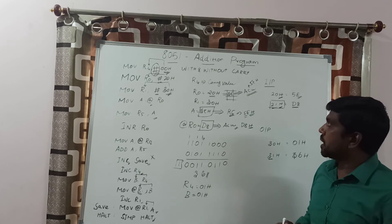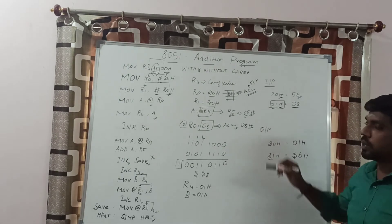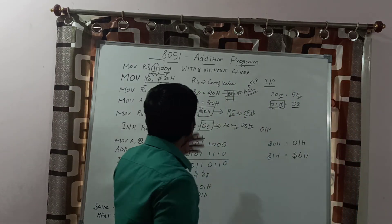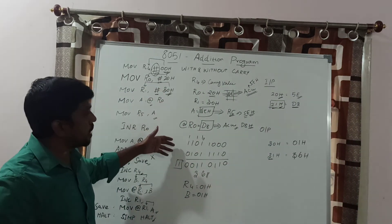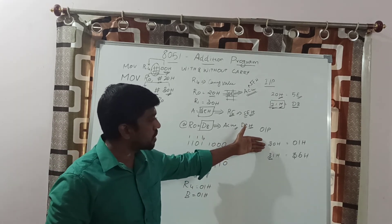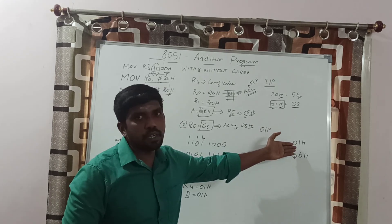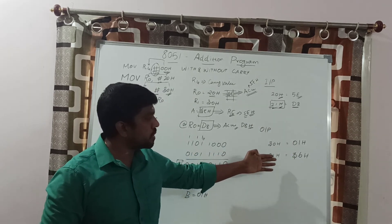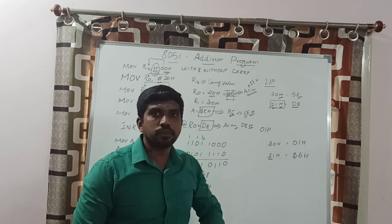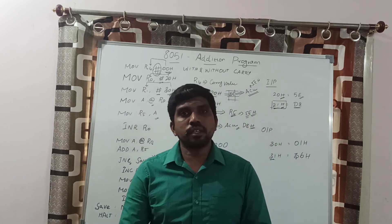In this program, you get two input values from memory locations 20H and 21H — the corresponding values are 5EH and D8H. After executing the addition function, the result is stored in memory locations 30H and 31H. Memory location 30H represents the carry value 01H, and memory location 31H represents the sum value 36H. Thank you for visiting our channel — kindly subscribe and support the channel.